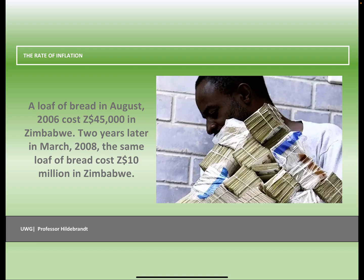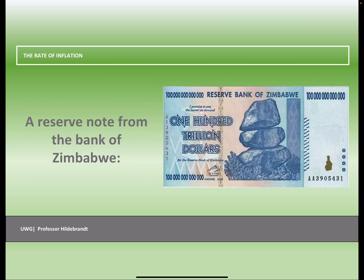More recently, we've seen hyperinflation in Zimbabwe and Venezuela. A loaf of bread in August 2006 cost $45,000 Zimbabwean dollars; two years later that same loaf of bread was $10 million Zimbabwean dollars — that is hyperinflation. There's also a bank note from the Bank of Zimbabwe here — look at the denomination: it's $100 trillion. That's how bad their hyperinflation had gotten.